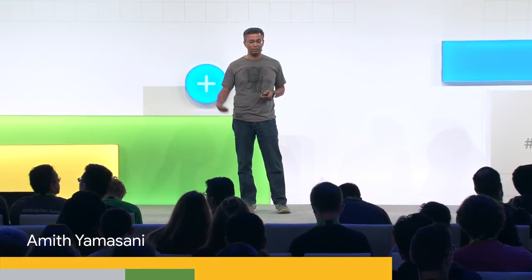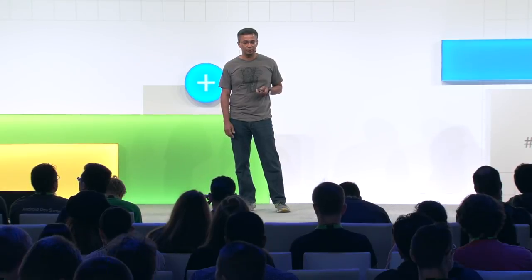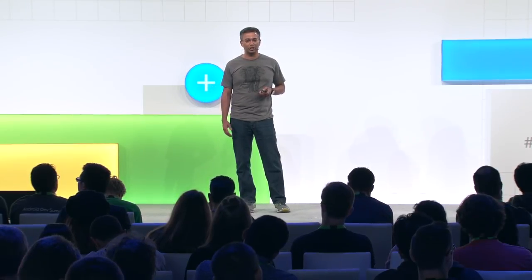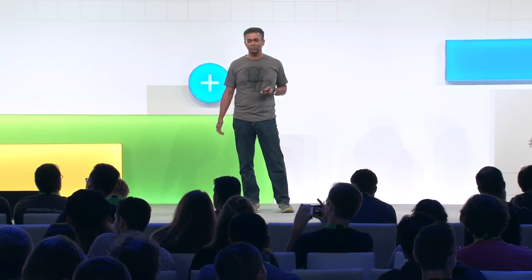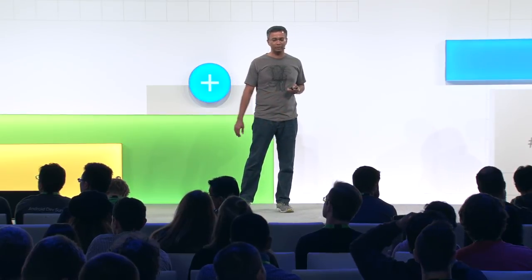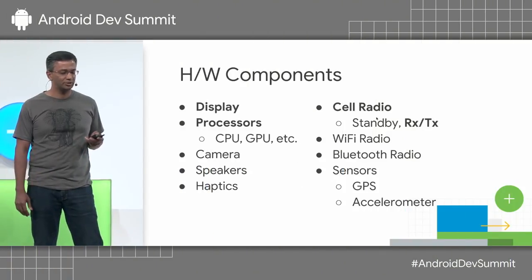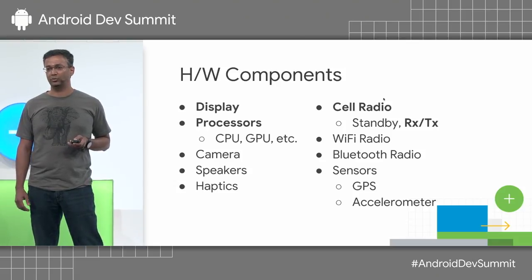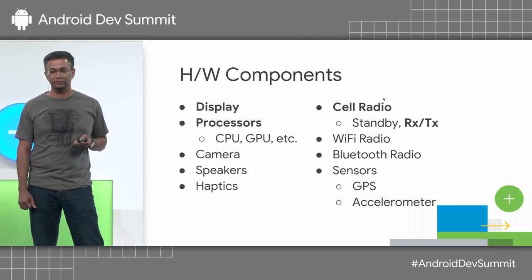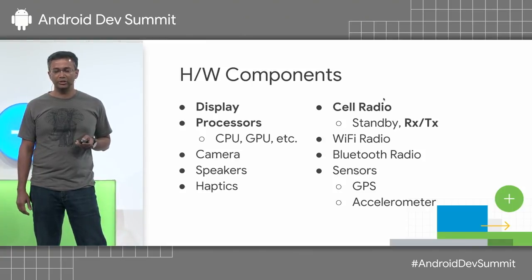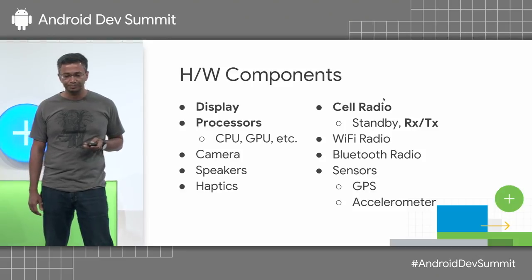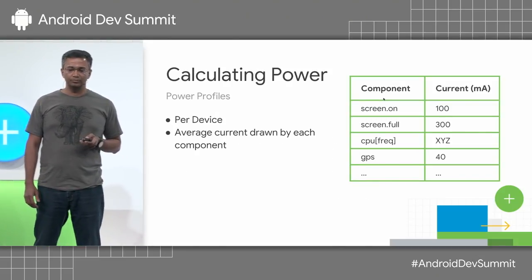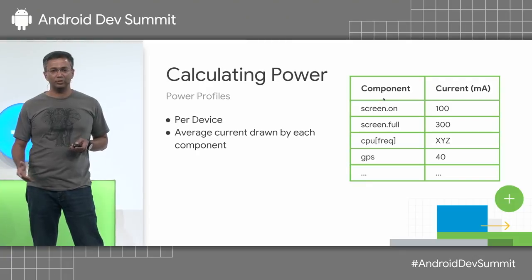Let me quickly walk through how we actually estimate how an app consumes power on the device. These are the typical hardware components that are consuming power on a typical phone. I've highlighted some of the top consumers. You got an earful about display and how much power that consumes from Chris and Alan. Running the CPU at high frequencies is also pretty expensive. And transferring data over the cell network is quite expensive as well. So when each device is manufactured, the OEM provides something called a power profile.